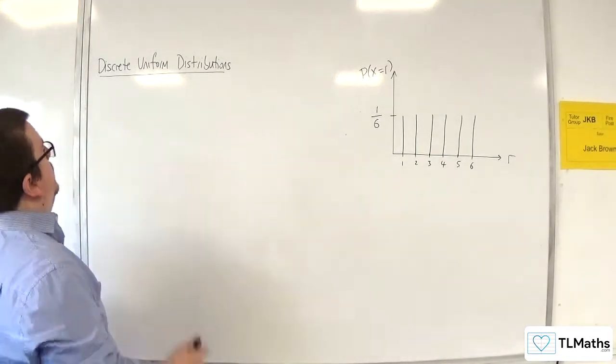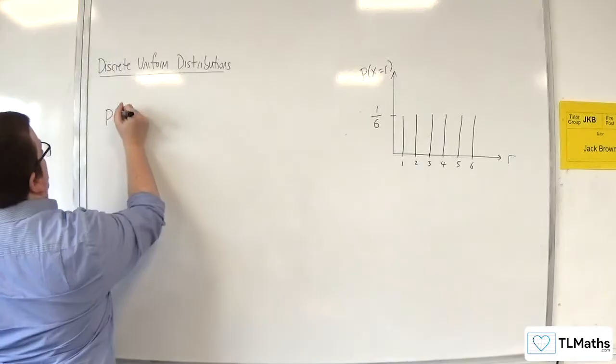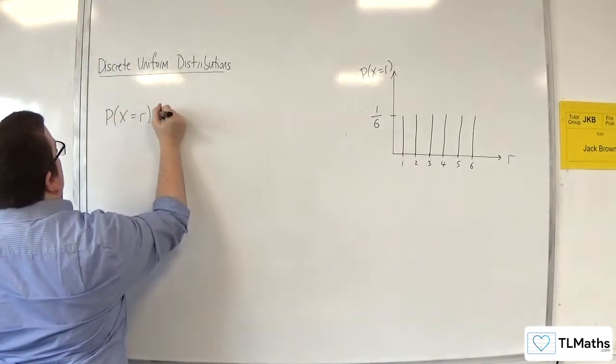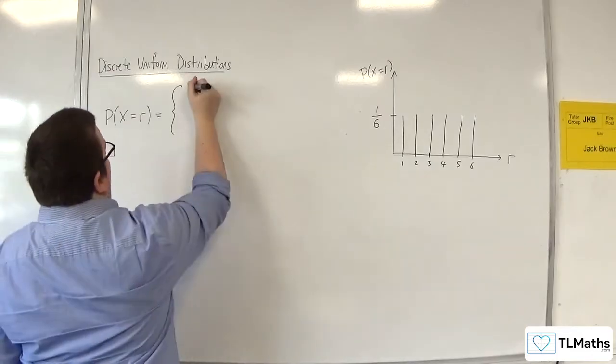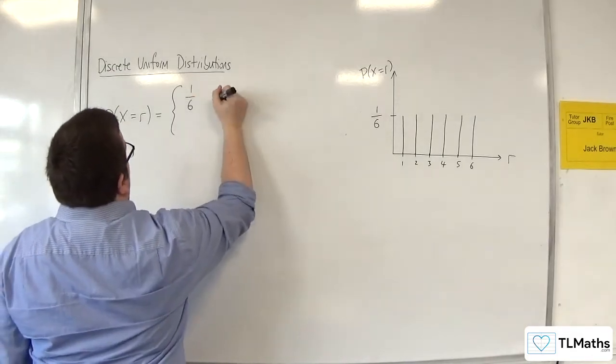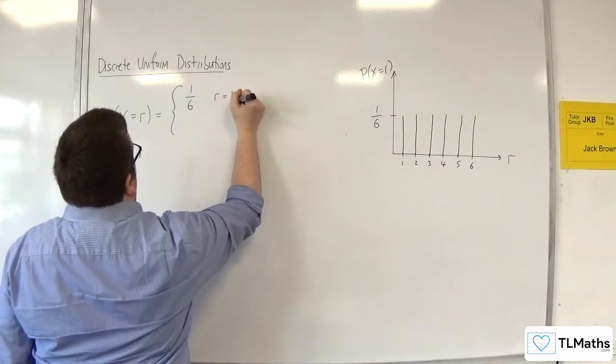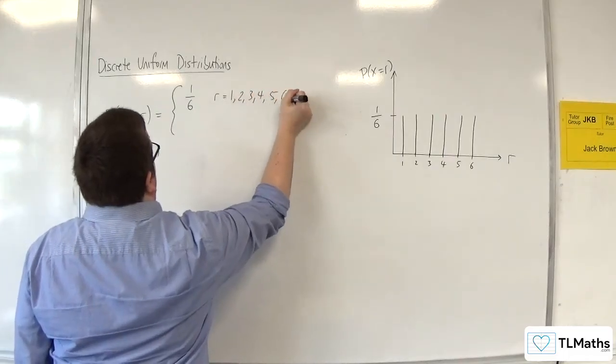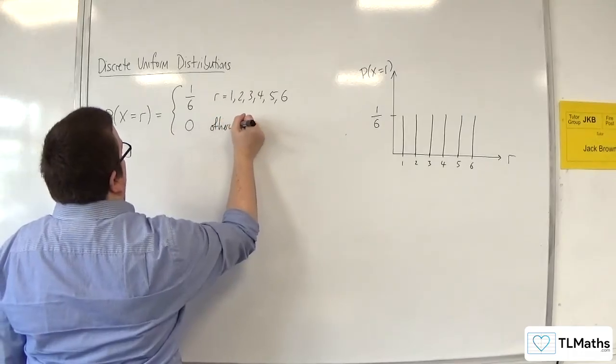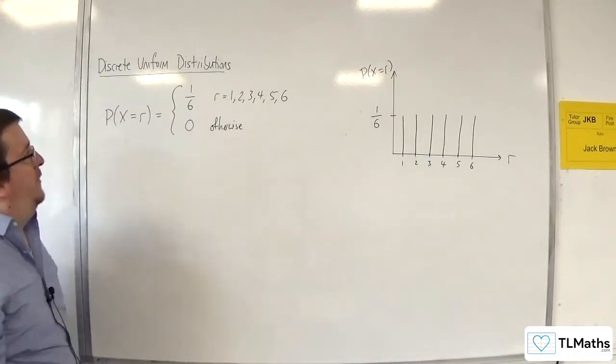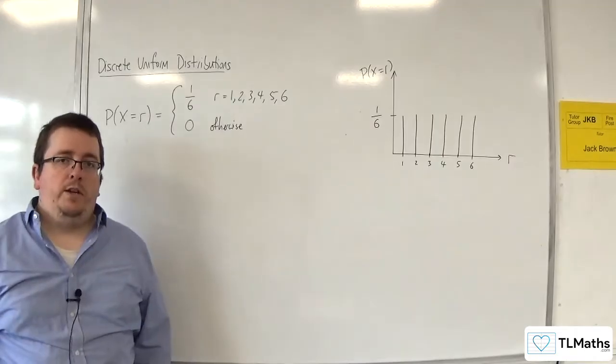So how would I write that? Well, I could write that as the probability of x being equal to r is equal to... And in our case, the probability is always going to be 1 sixth for r is equal to 1, 2, 3, 4, 5, 6, and 0 otherwise. So this is an example of a discrete uniform distribution.